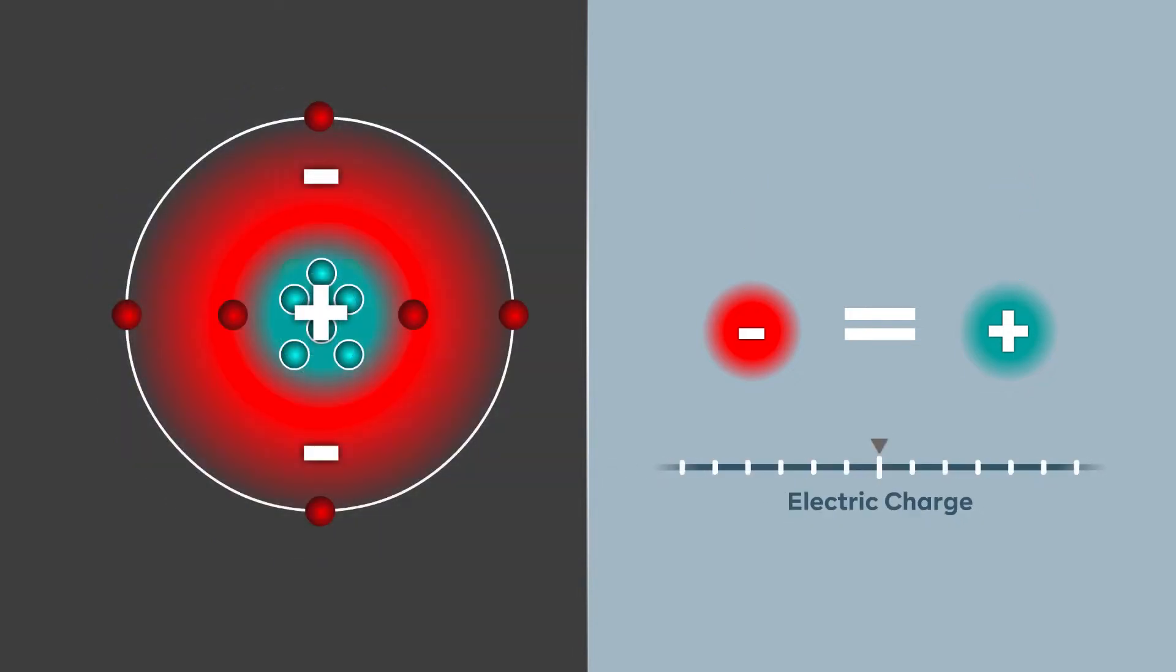However, we can change this state by causing the atom to lose or gain electrons. When the atom has fewer electrons than protons, it becomes positively charged. But when an atom has more electrons than protons, the net charge swings the other way and the atom becomes negatively charged. In other words, losing or gaining electrons changes the atom's electric charge.